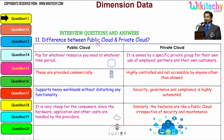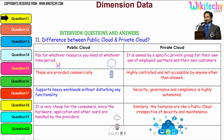So here is the question: what is the difference between the public cloud and the private cloud? Public cloud is like viewing a film in a cinema theatre, whereas viewing a film at home using a DVD is your private cloud. With public cloud, you pay for whatever resource you need at whatever time period. Private cloud is owned by a specific private group for their own use, for employees, partners, and their own customers.